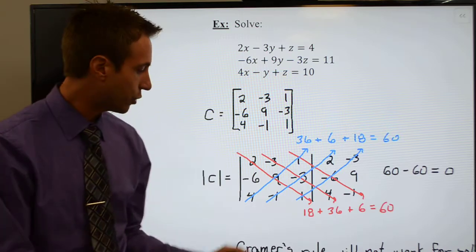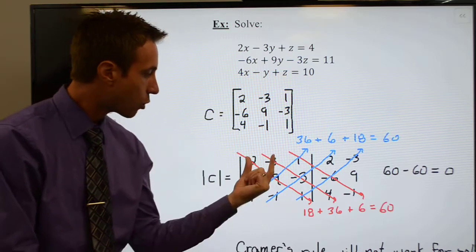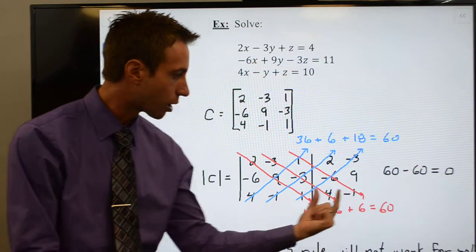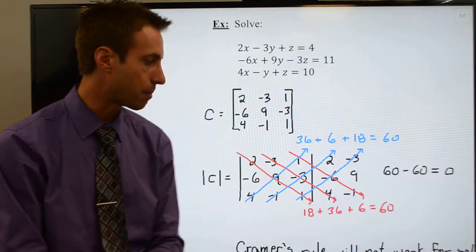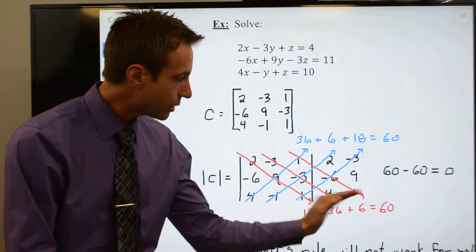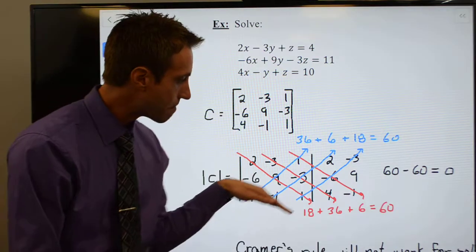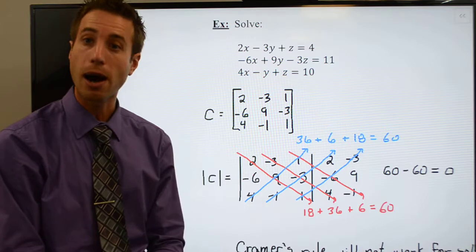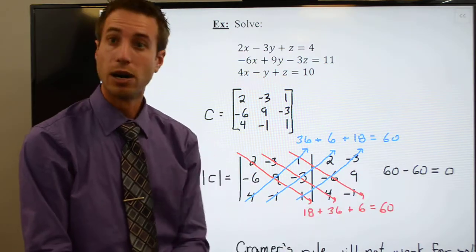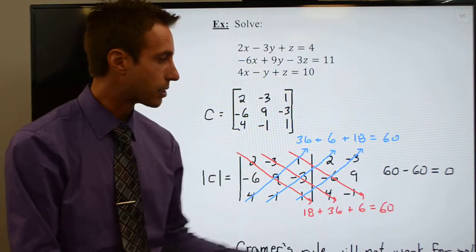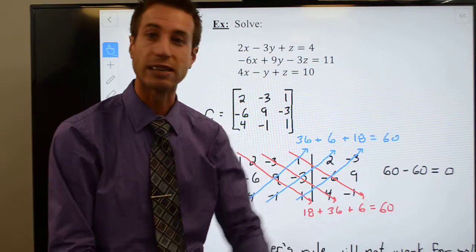I then proceed to find the determinant of my coefficient matrix by rewriting the first two columns outside of my determinant bars. I do my major diagonals and I wind up with a bottom number of 60. I do my minor diagonals and I wind up with a top number also of 60. Bottom minus top means 60 minus 60 which gives me zero.